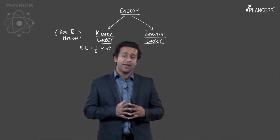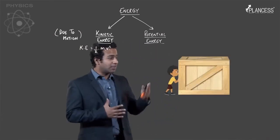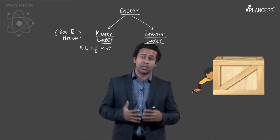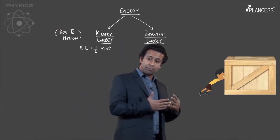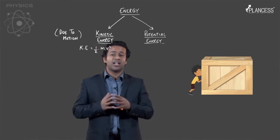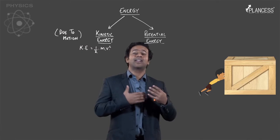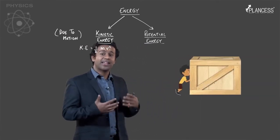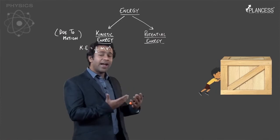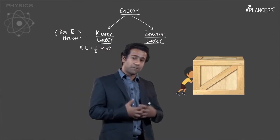Let us understand through an example how we can interpret kinetic energy. Say there is a man who is pushing a block — as he pushes this block, he is continuously doing some work on it. During this push, as he keeps pushing, the block starts to gain speed. What you can interpret is that as the man does work on the block, that work is getting stored in the form of energy, and that energy is kinetic energy because it is due to motion.